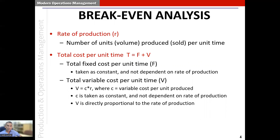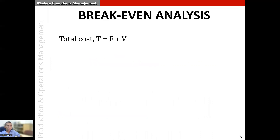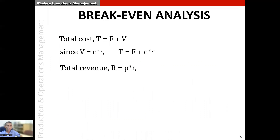As the rate of production increases, the total variable cost incurred per unit time will also increase. The total revenue per unit time, capital R, equals small p times small r, where small p refers to the price per unit sold. So capital R is directly proportional to the rate of production. Both capital R and capital V are dependent on the rate of production and are variable, whereas capital F is a constant. The total cost capital T equals capital F plus capital V, which becomes capital F plus small c times small r.